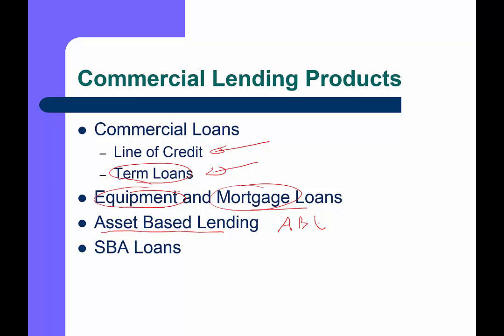Asset-based lending, often called ABL, is a variation of term lending typically secured by working capital assets — inventories and receivables being the most common. Companies with high amounts of inventories and receivables, particularly those that vary over the course of the year, will take out loans backed by these assets. Small Business Administration loans are very important for small businesses, defined as companies with fewer than 500 employees, particularly early in their existence.